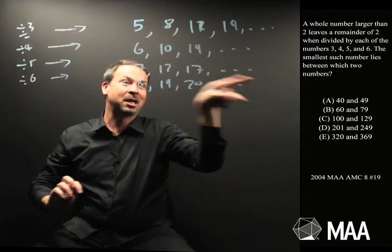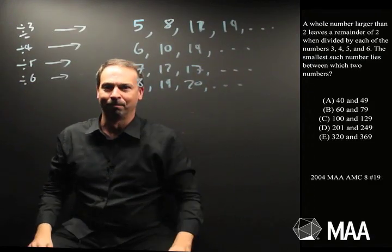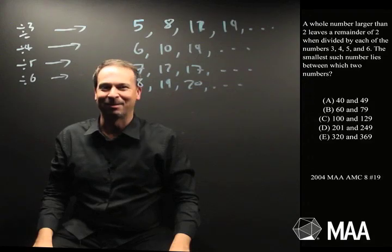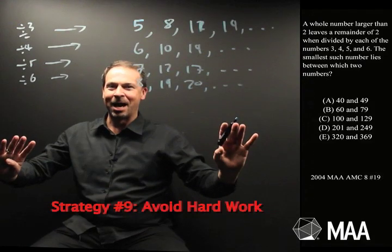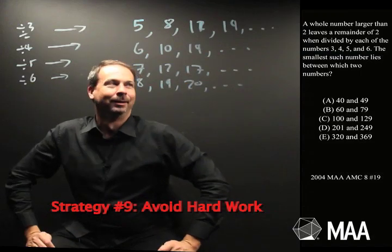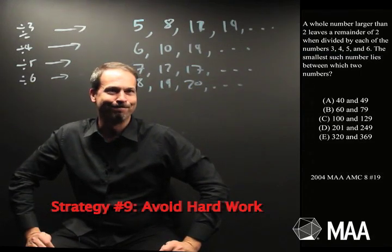So what I could do is just keep writing out all the lists until I see a number in common. That seems like awfully hard work. Alright. Strategy number 9: Avoid hard work. How can I avoid hard work in this one?